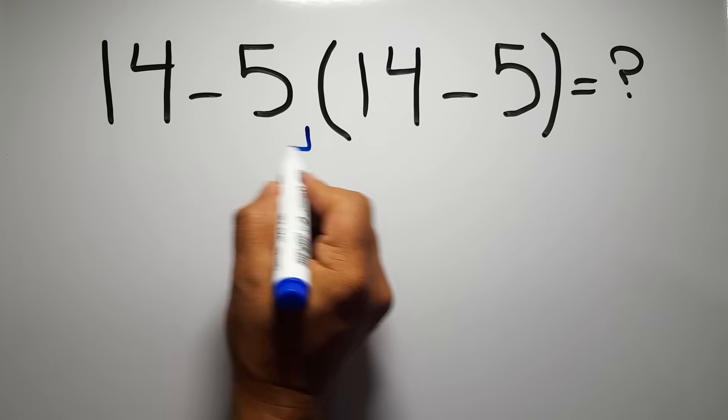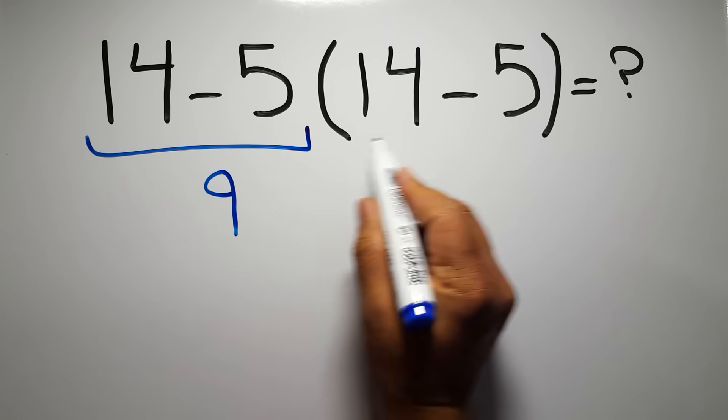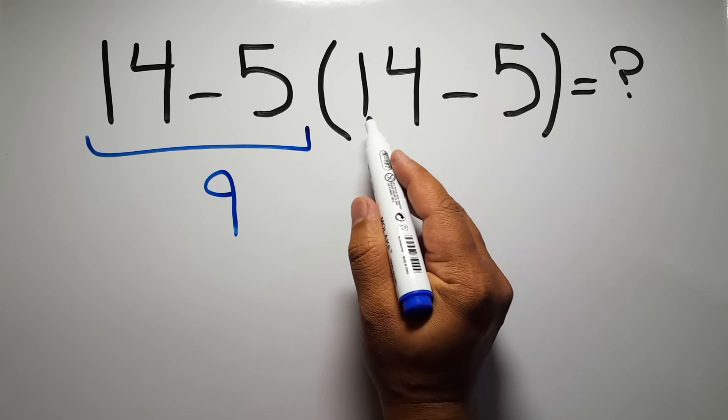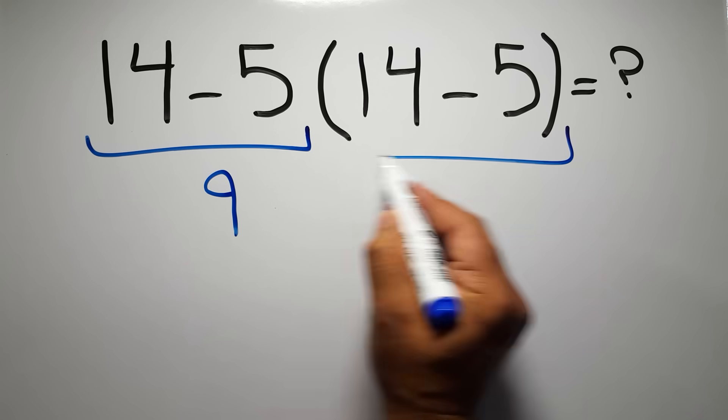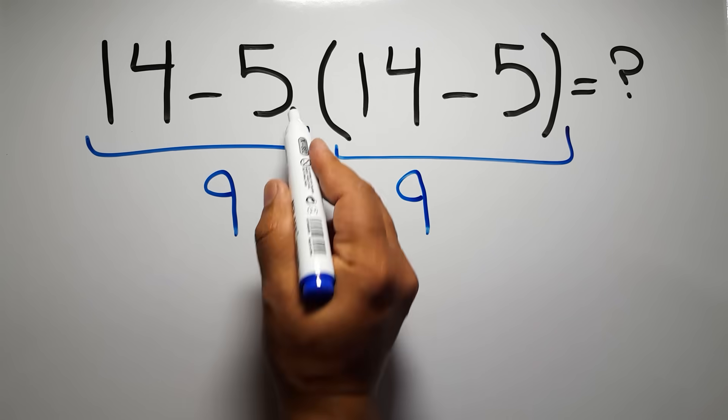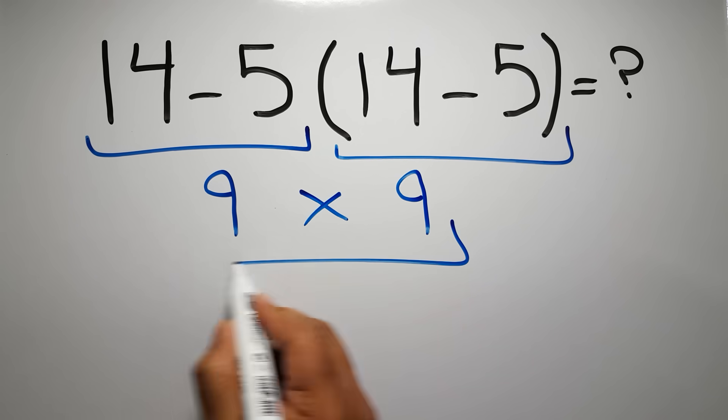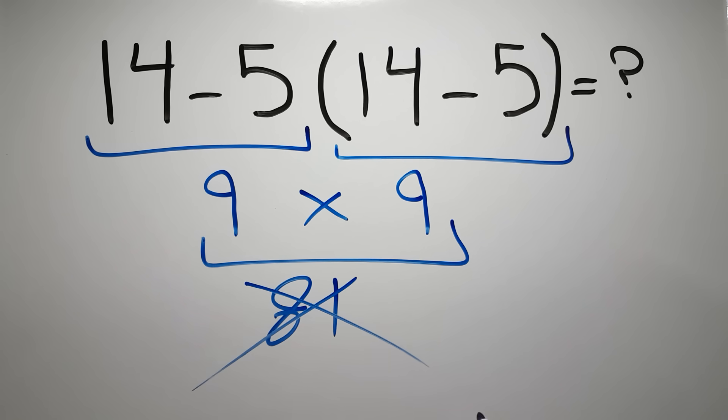14 minus 5 gives us 9, and again here inside these parentheses we have 14 minus 5. So 9 times 9 gives us 81, but this answer is not correct because according to the order of operations, first we have to do parentheses.